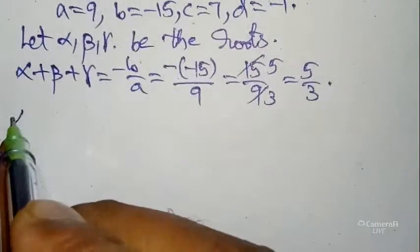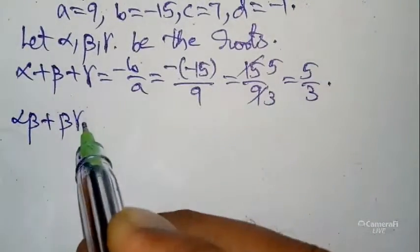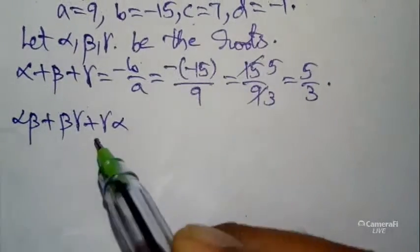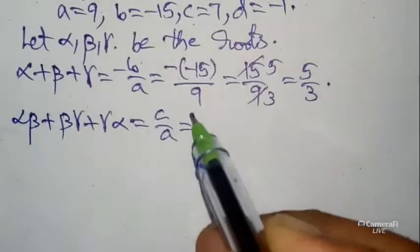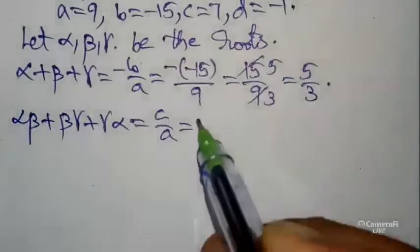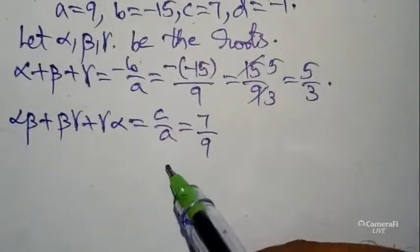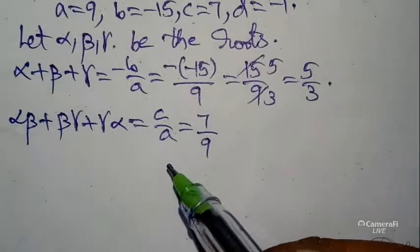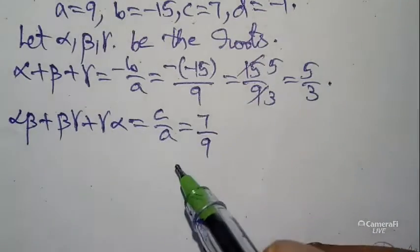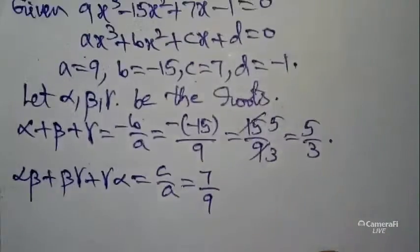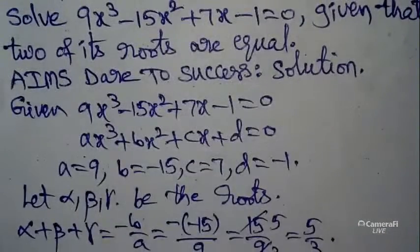One more formula: sum of the product of roots taken two at a time — αβ + βγ + γα = c/a, where c = 7 and a = 9. So αβ + βγ + γα = 7/9.